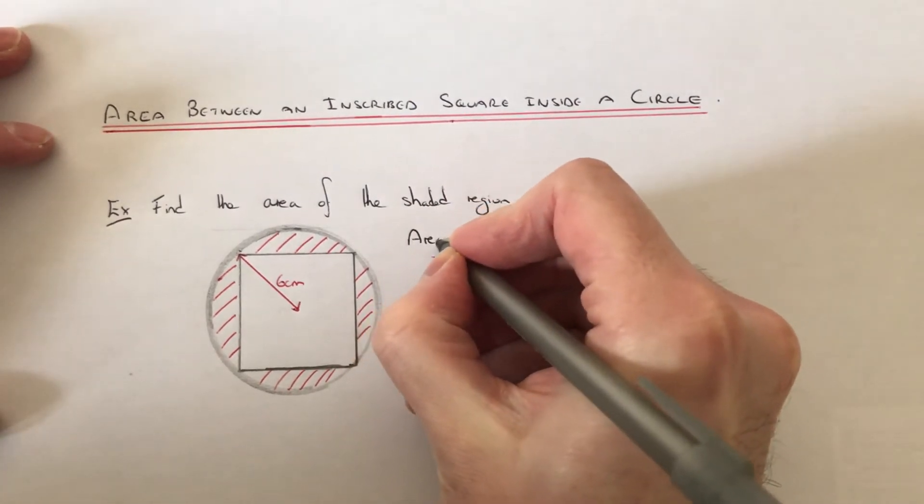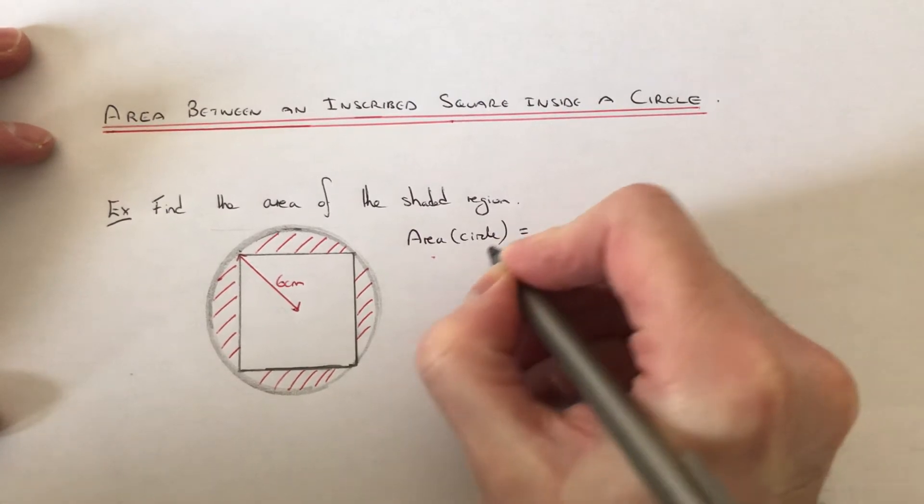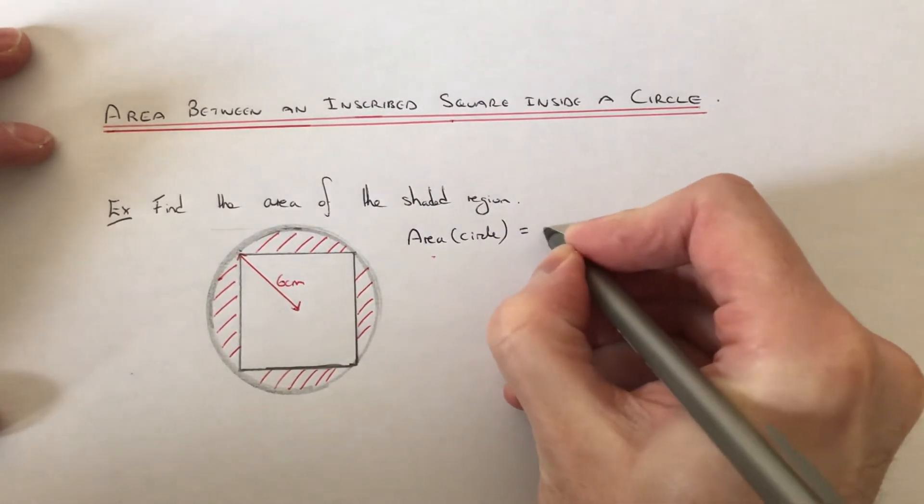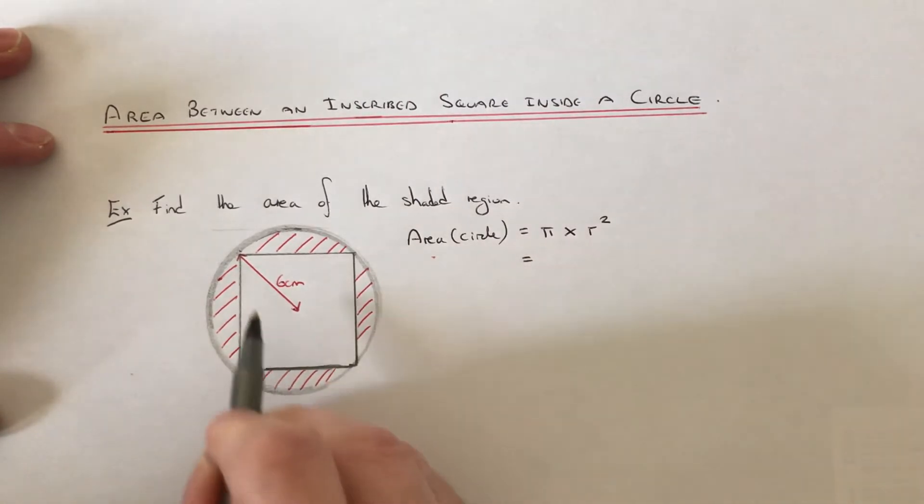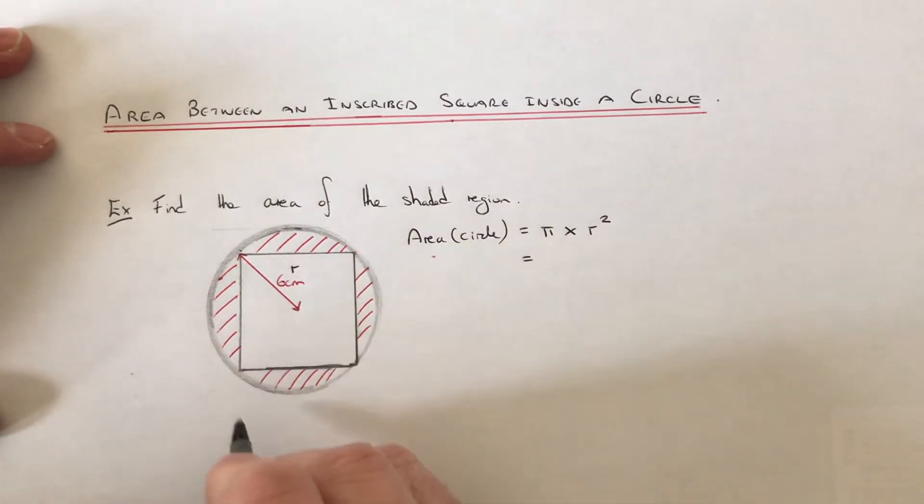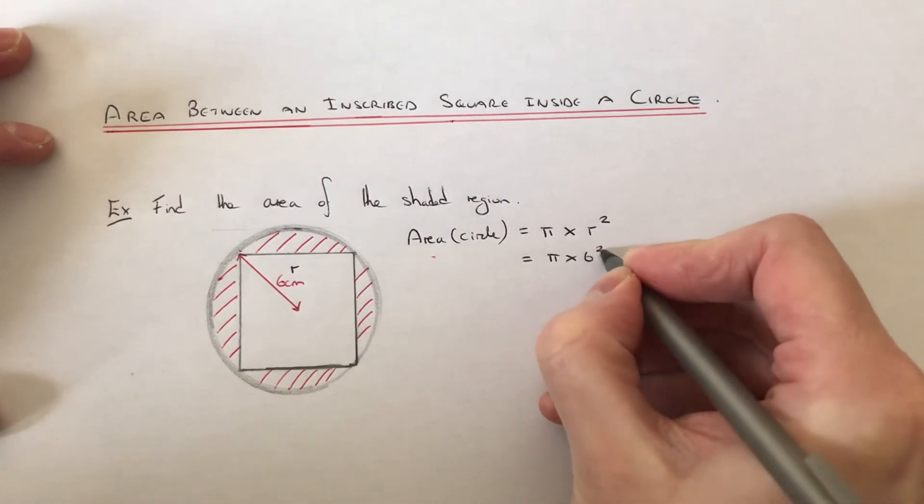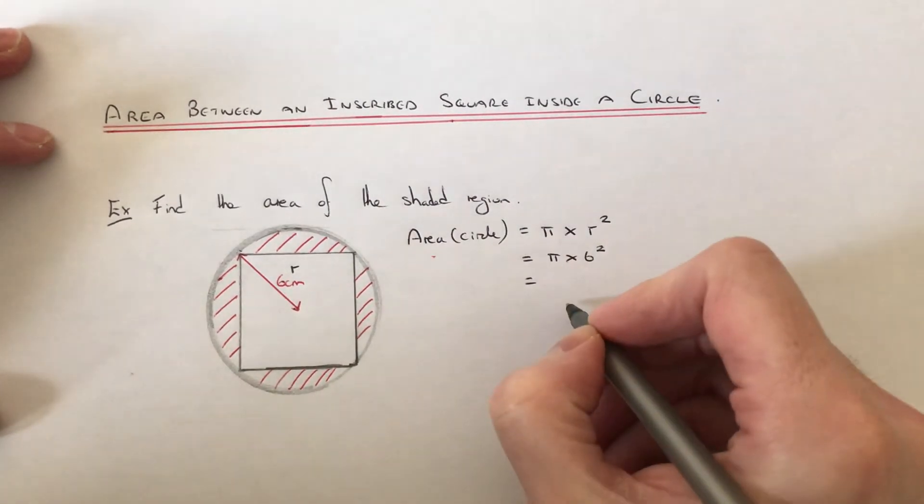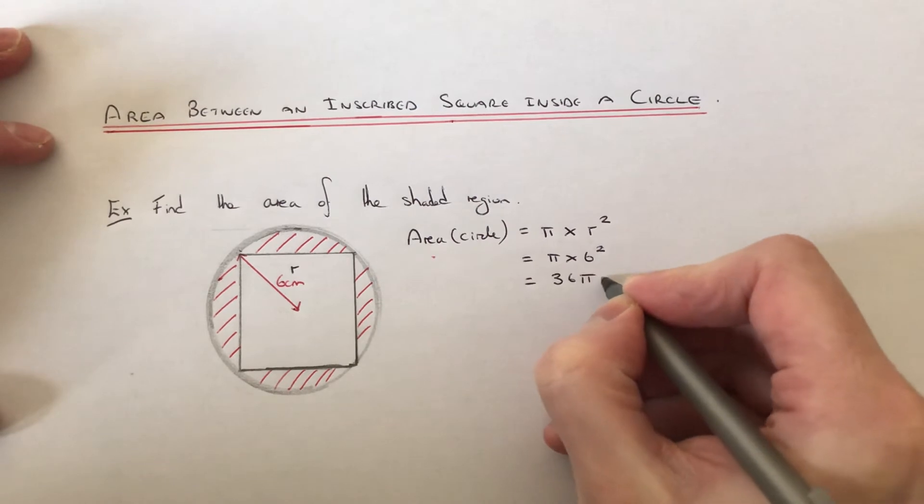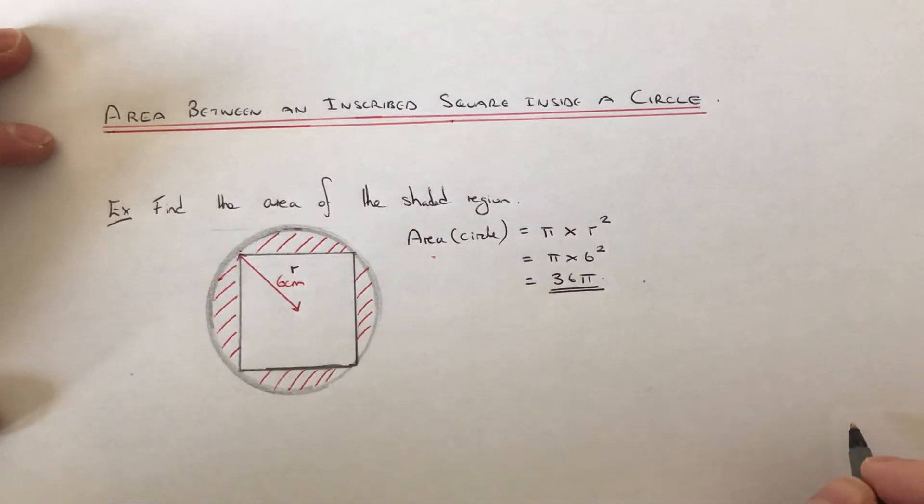Let's begin by working out the area of the circle. To find the area of the circle you do pi times radius squared. So this is our radius here, which is six centimeters. So do pi times six squared. Let's just work this out as an exact answer. Six squared is 36, so it'll be 36 pi.